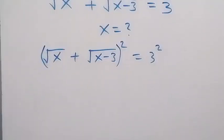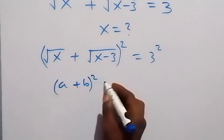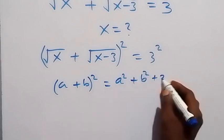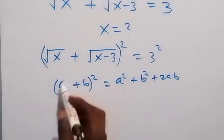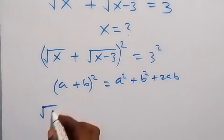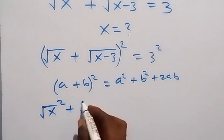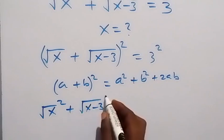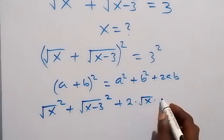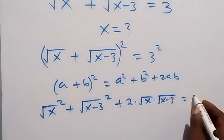The square here follows the pattern where we have a plus b, all squared, which can be written as a squared plus b squared plus 2ab. Here a is root x and b is root x minus 3. So we get root x squared, plus root x minus 3 squared, plus 2 times root x times root x minus 3, equals 3 squared.